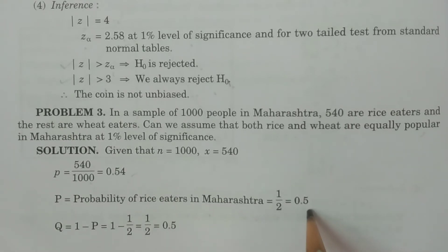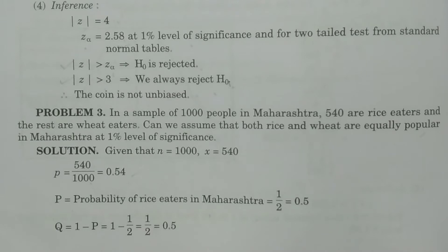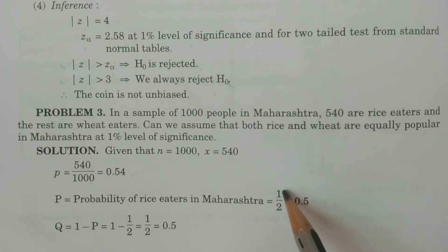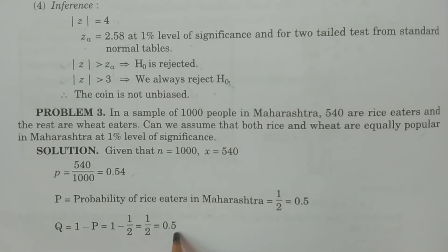Capital P is the probability of rice eaters in Maharashtra, which is 1 by 2, equal to 0.5. This is because there are two combinations — rice and wheat — and the favorable outcome is rice eaters, so by simple mathematical probability it is 1 divided by 2, giving 0.5. Therefore Q is also 0.5.